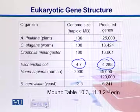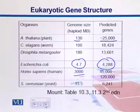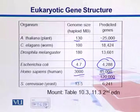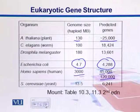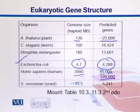In humans, the genome size is 3,000 MB — MB here meaning mega base pairs, not megabytes. There are an expected 45,000 to 120,000 genes, though only slightly over 30,000 have been identified. If we look at smaller organisms with smaller genomes and divide the number of genes by genome size, we see they have higher gene densities compared to larger genomes.